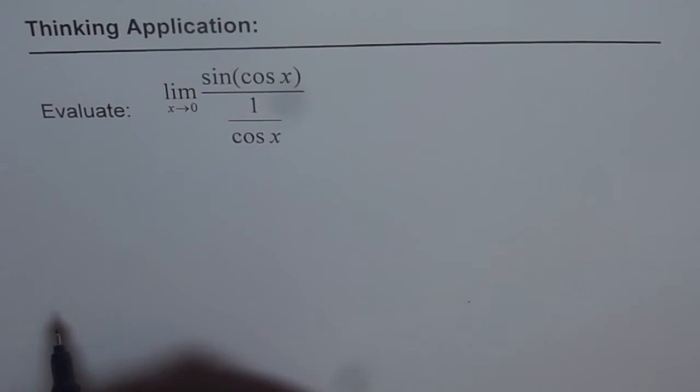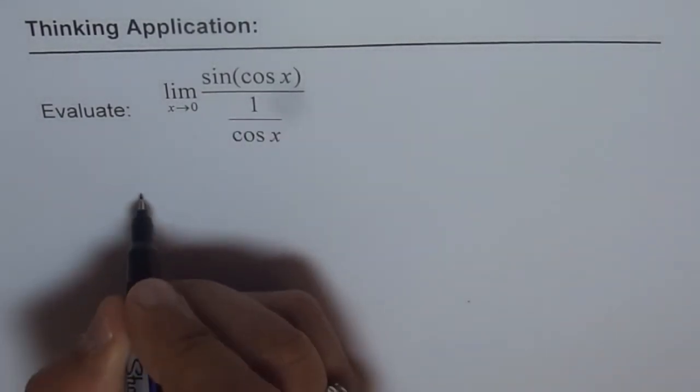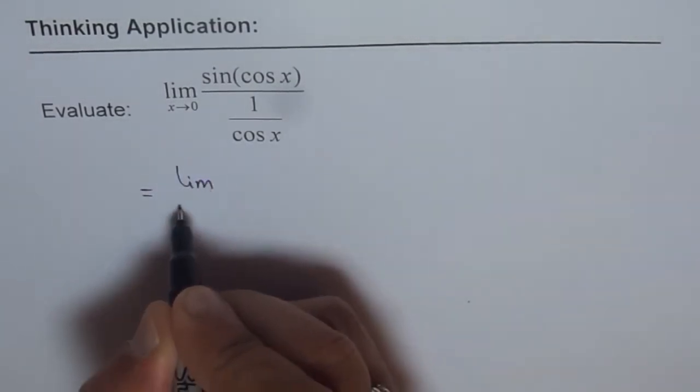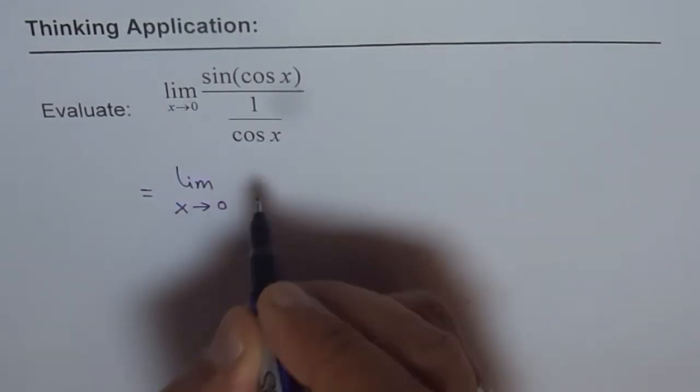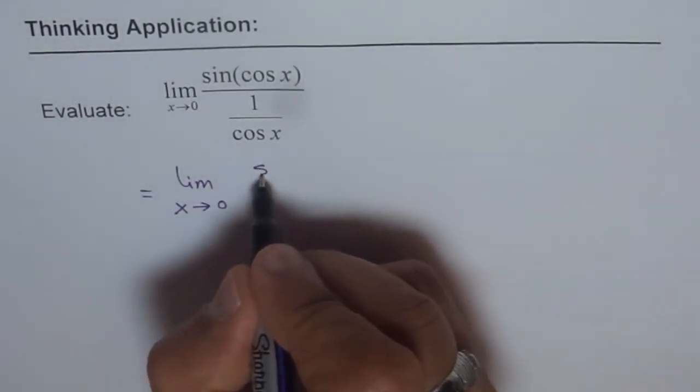What we will do in this case is we'll substitute 0 and then check our answers. We get limit x approaches 0. When we substitute we don't normally write this. Let me write the question first.